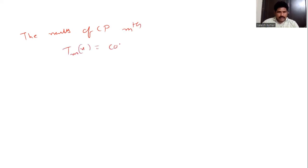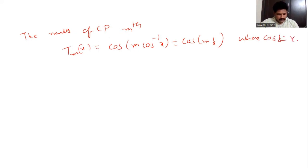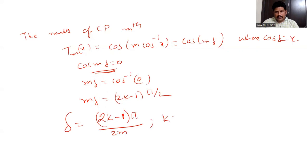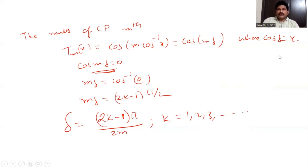The nulls of the Chebyshev polynomial are given by the roots of the mth degree polynomial. Setting cos(mδ) = 0, we get mδ = (2k-1)π/2, so δ = (2k-1)π/(2m), where k = 1, 2, 3, and so on. These are the effects of uniform and non-uniform amplitude distribution.